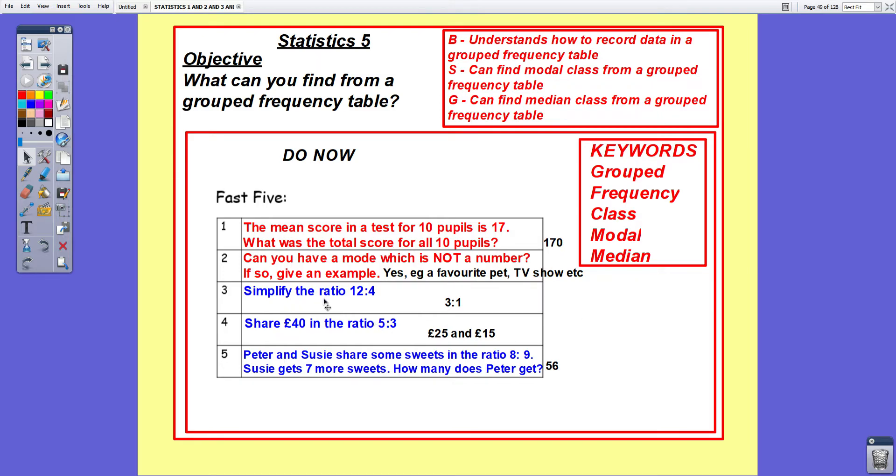Question three: simplify the ratio 12 to 4. Since both numbers divide by 4 it simplifies to 3 to 1. If you put 6 to 2 you've gone halfway but you need to go full way on a simplifying the ratio question.